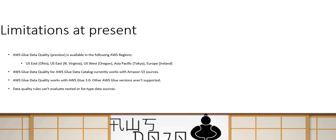A few limitations exist at present. First, this service is still under preview and is available in only some limited regions. Right now, data quality only works with S3-based data sources. It works only with Glue 3.0 — other versions are not supported. And data quality rules cannot evaluate nested or list-type data structures at this point in time. These things will likely change over time.